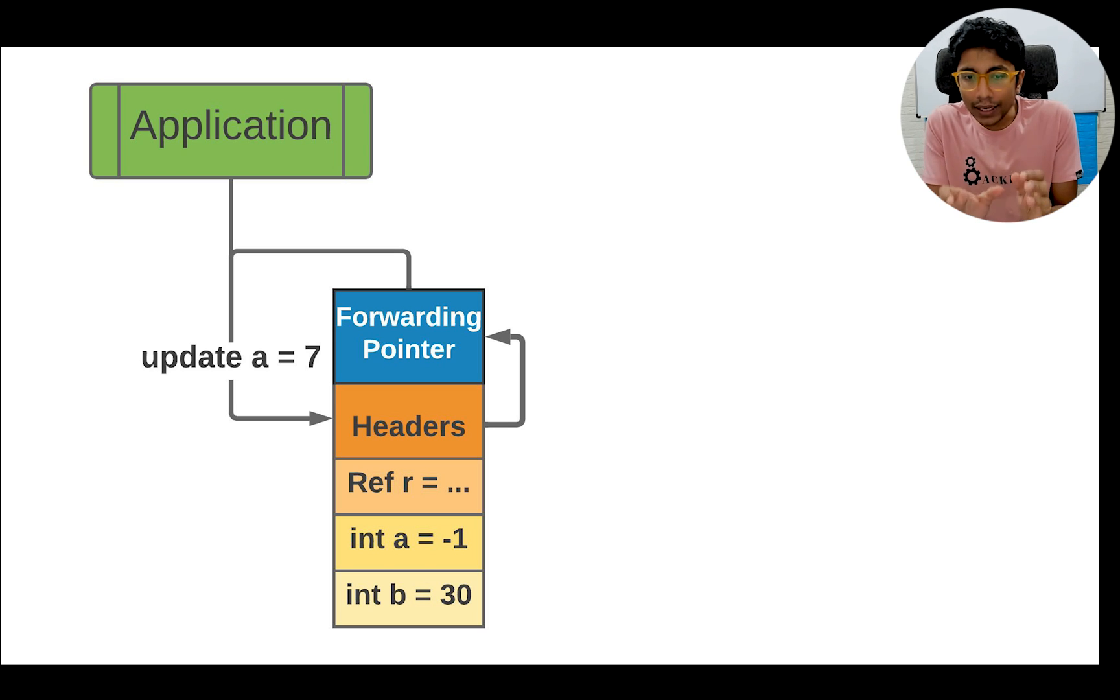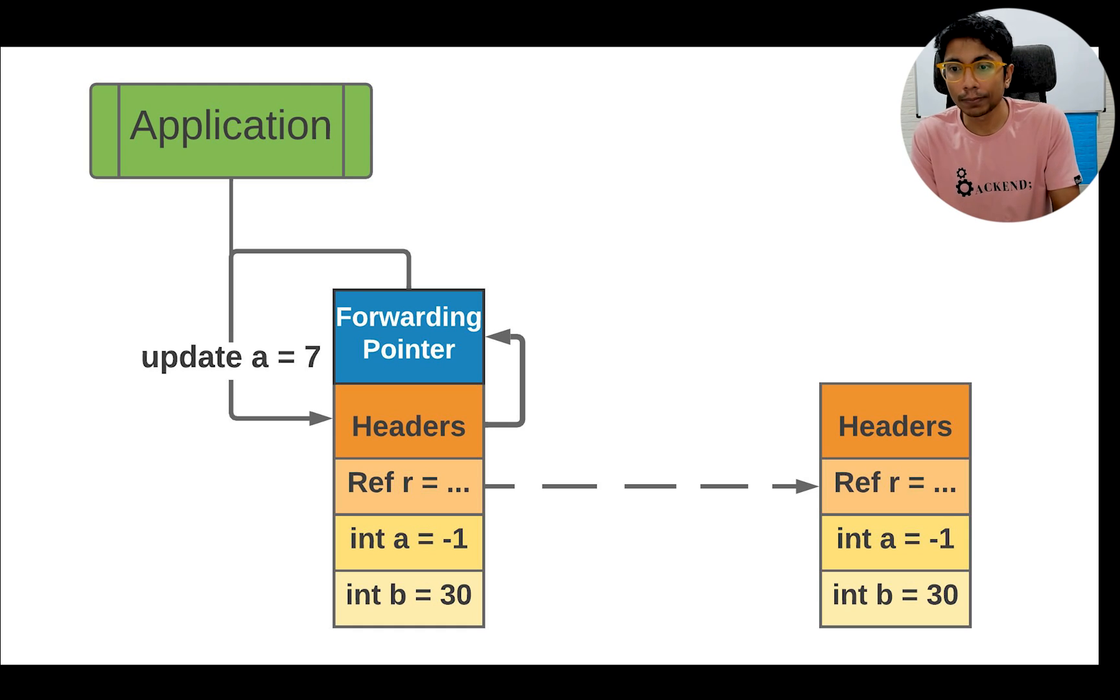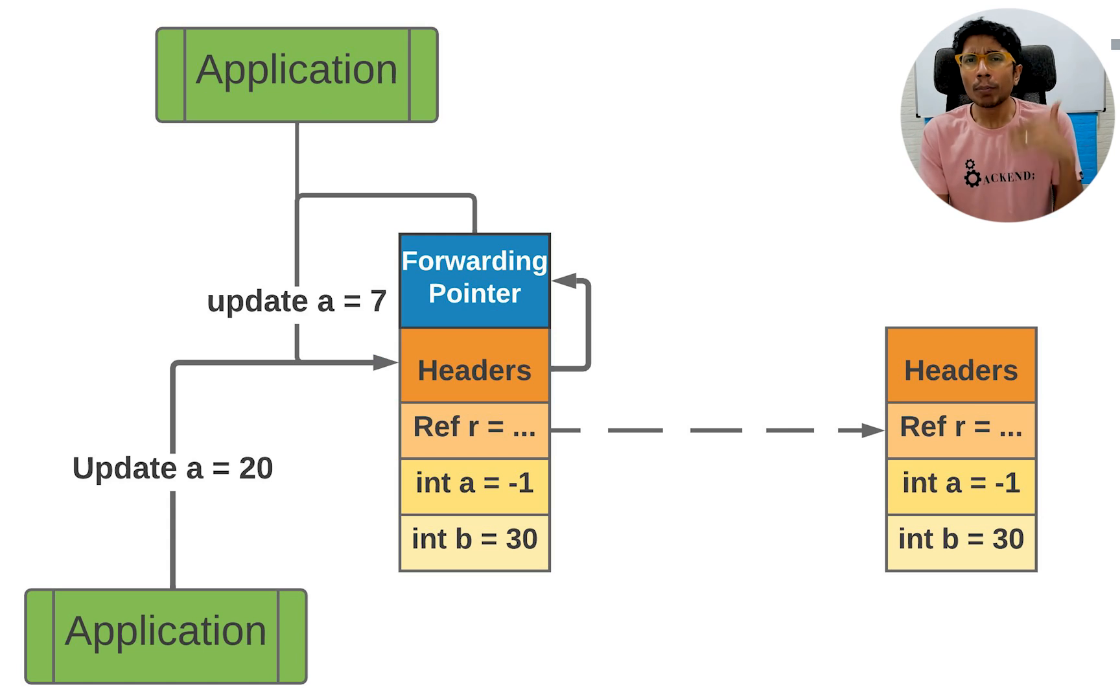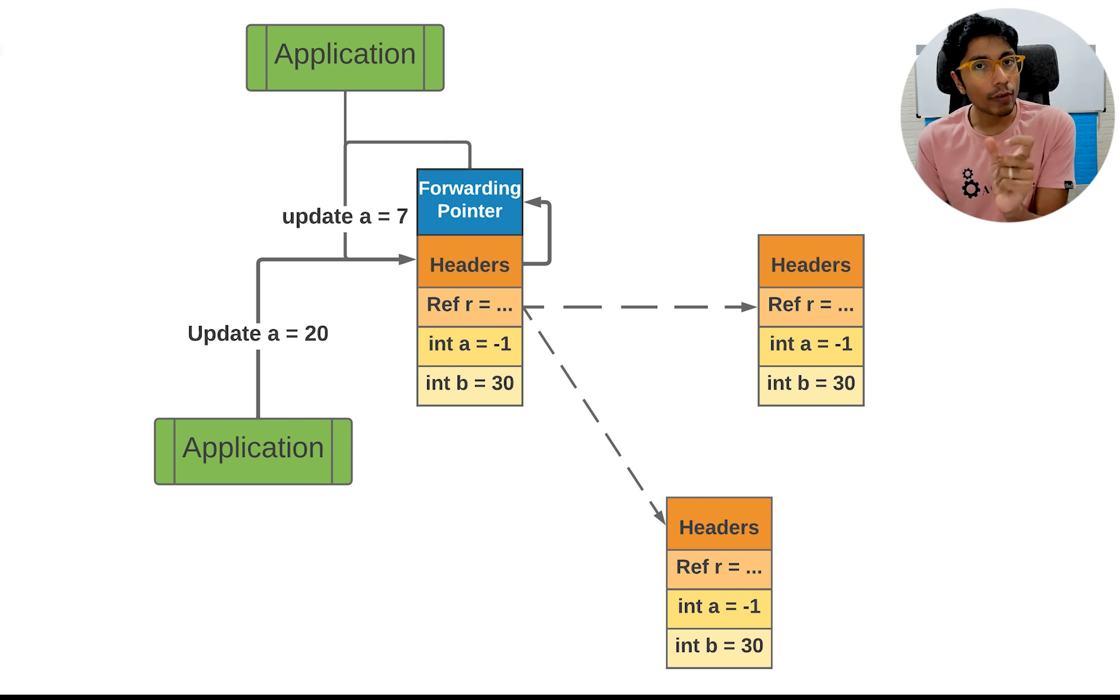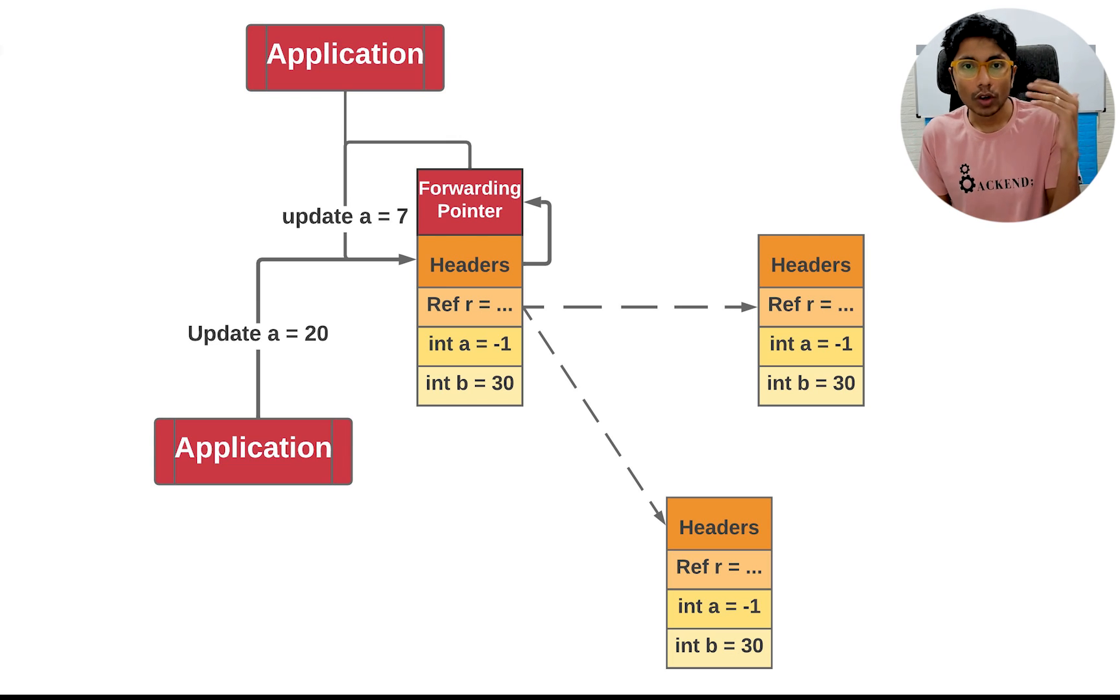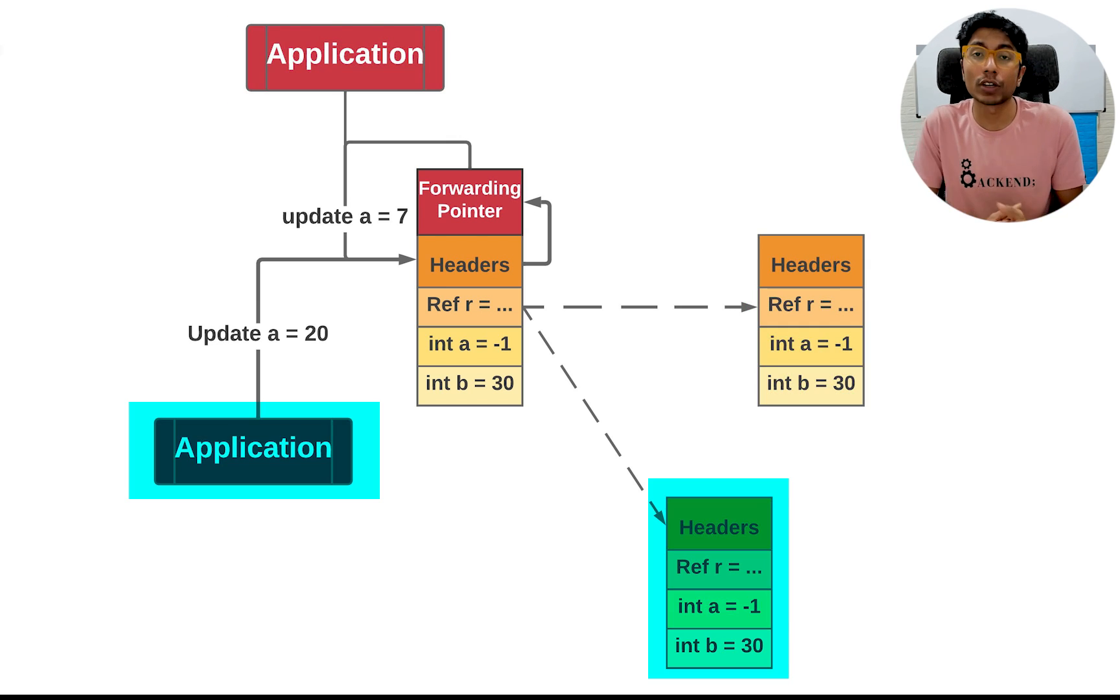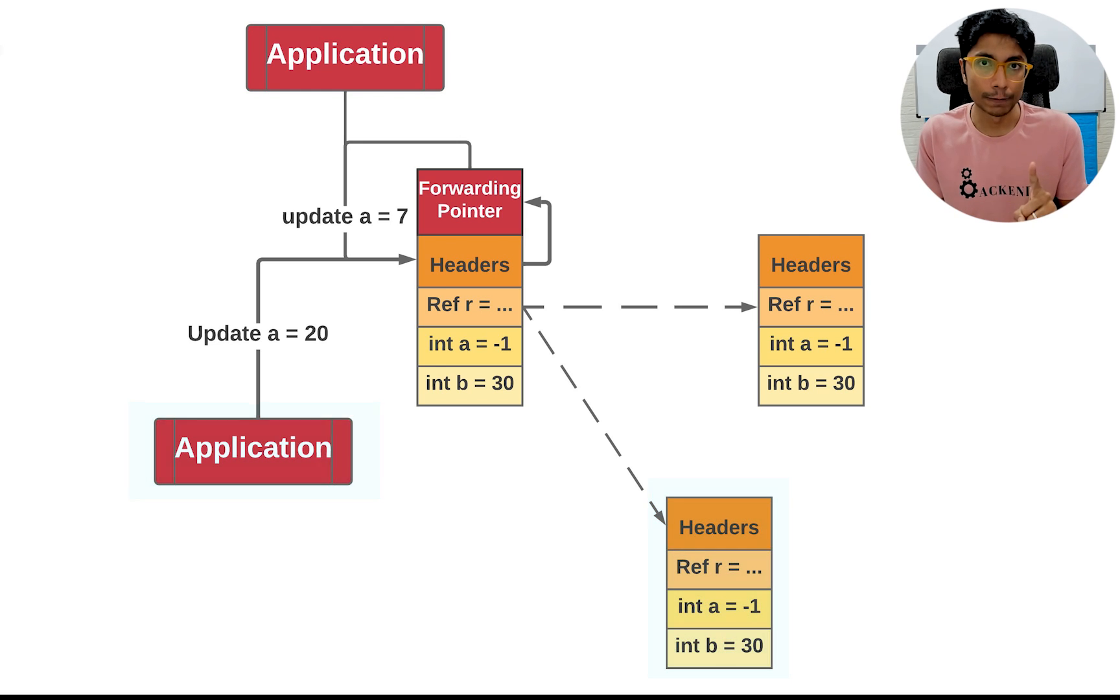Now the application can wake up and say that listen, I want to update this value, this field a, to seven. But it can't directly update this value. It has to create a copy of this object because you have a forwarding pointer, means garbage collection is going on. It's too risky to make this update. I'm going to create a copy of this object. And then I'm going to try to update it. But the moment you do that, when you copy this new object, there might be concurrency. There might be another thread which says listen, I want to update the value of b equal to 20. So you have multiple concurrent write operations and a garbage collector also running. This is typical standard thing in any application. Now both of them will try to set the value of the forwarding pointer to their respective copy. So the first application is trying to move it to the first copy, the second one is trying to move to the second copy, but only one can succeed.